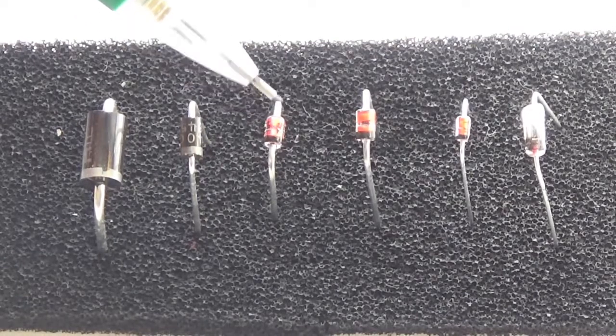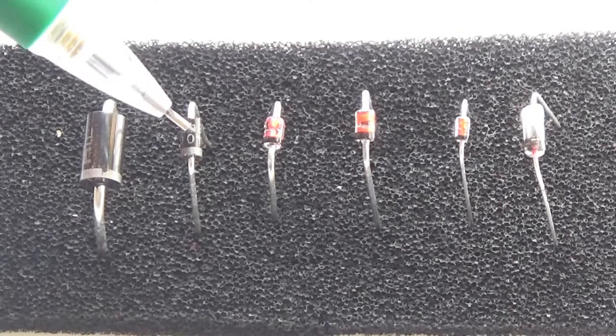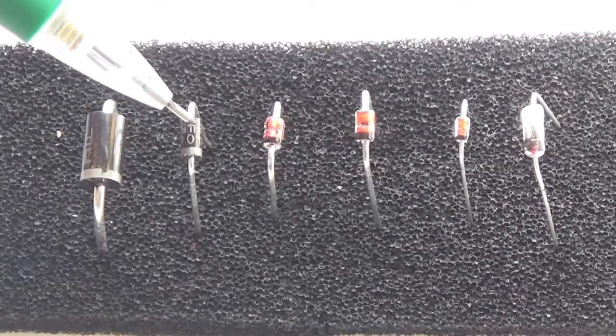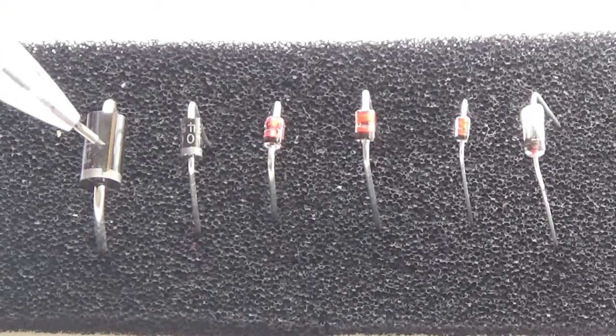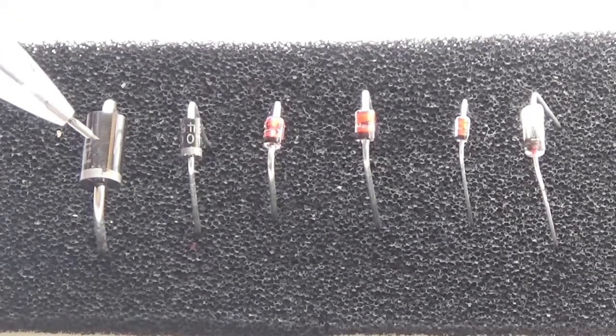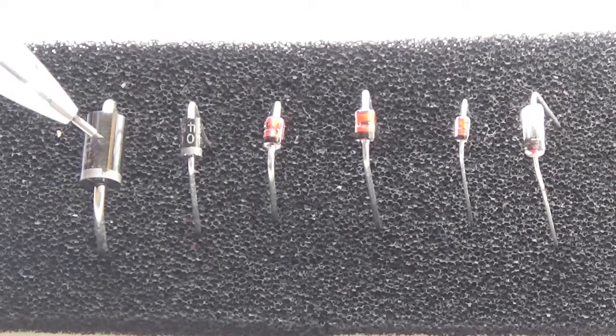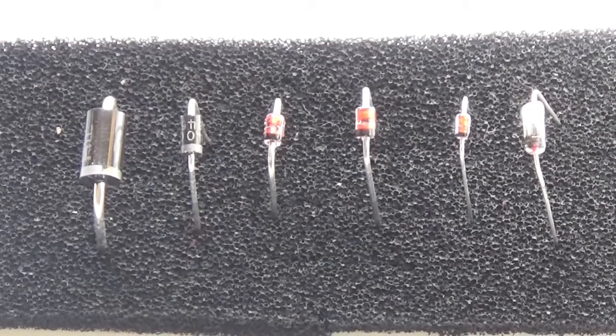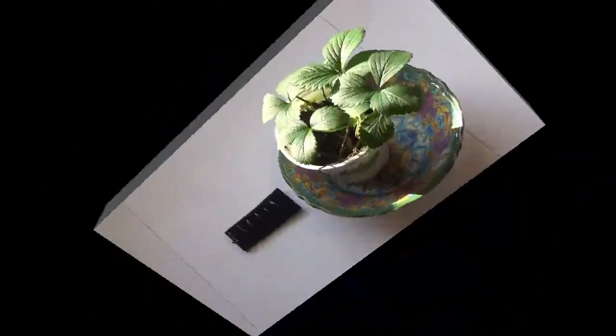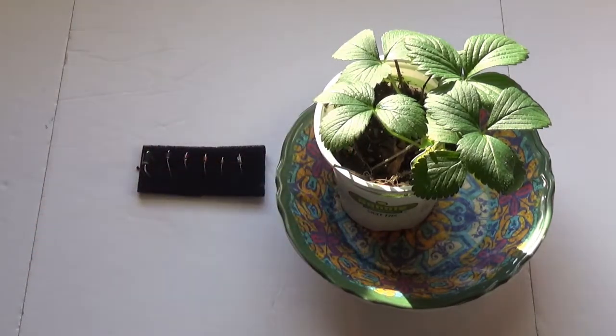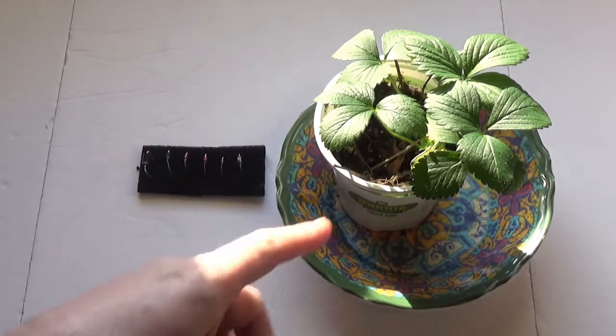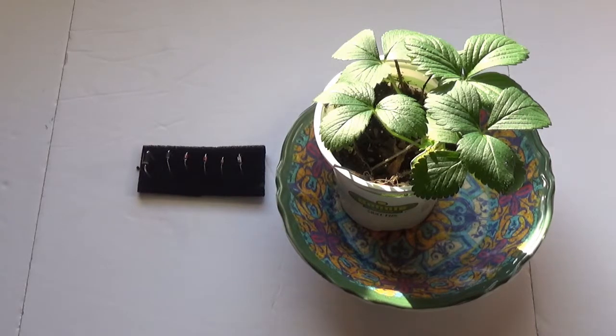Here's another zener diode, a 24 volt zener. Here's a rectifying diode, that's a 1N4007. And here's a fast recovery diode, part number FR304. Here's a strawberry plant. The strawberry plant's going to help us test these diodes.